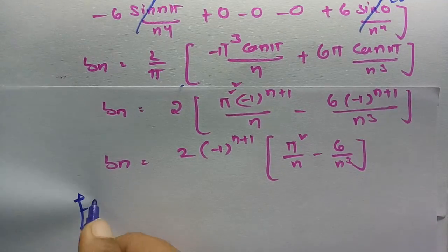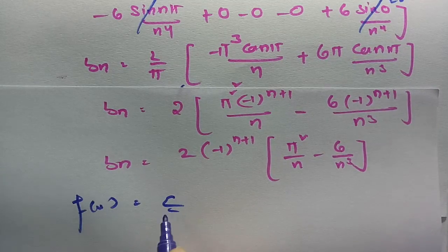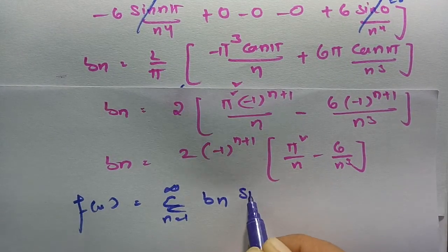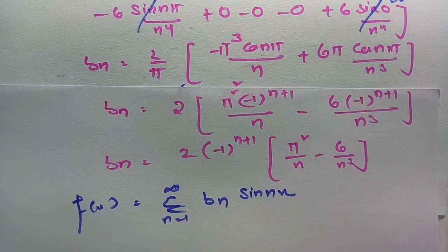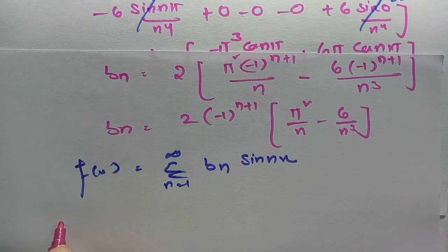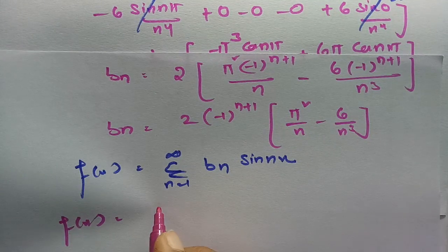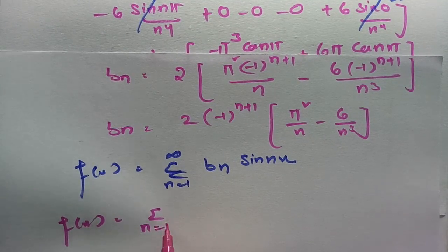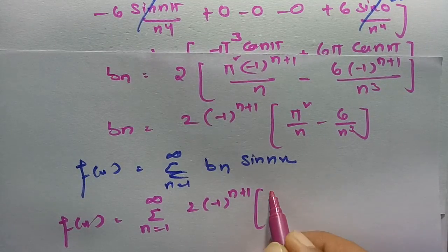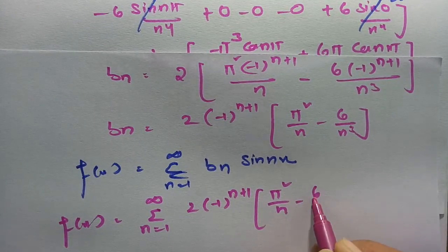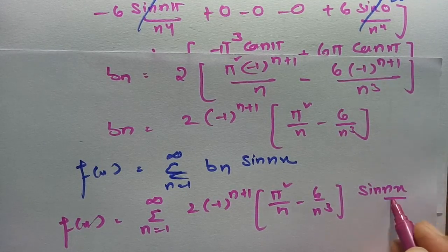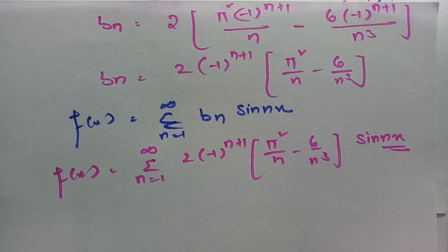Therefore, the Fourier series is: f(x) = Σ (n=1 to ∞) bₙ sin(nx), where bₙ = 2(−1)ⁿ⁺¹(π²/n − 6/n³). Substituting: f(x) = Σ (n=1 to ∞) 2(−1)ⁿ⁺¹ (π²/n − 6/n³) sin(nx). This is the complete Fourier series expansion of x³.